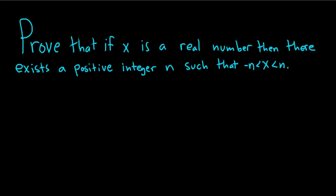In this video we have to prove that if x is a real number then there exists a positive integer n such that x is between negative n and n. So let's go ahead and try to work it out.